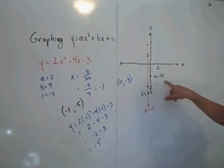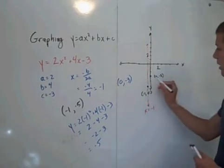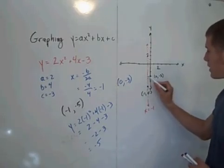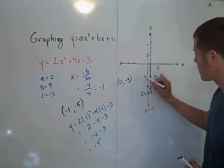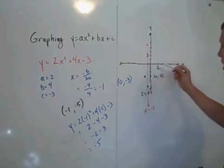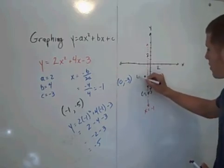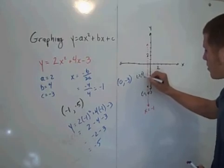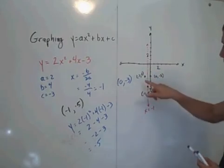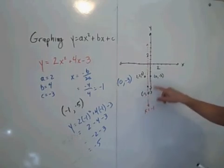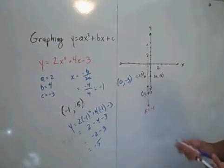Then we take the second point that we graphed, 0, negative 3. We walk 1 over to the axis of symmetry, 1 away from the axis of symmetry. And we get this point here, which is negative 2, negative 3. So now we have the point negative 2, negative 3, negative 1, negative 5 which is our vertex, and 0, negative 3.